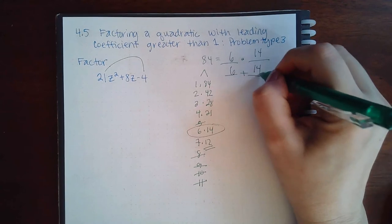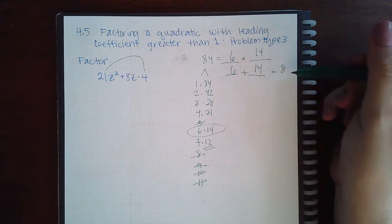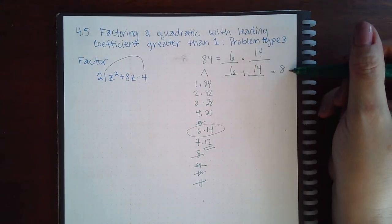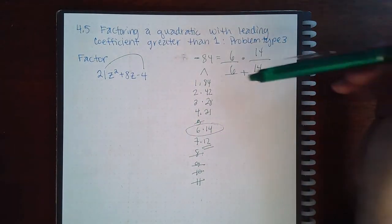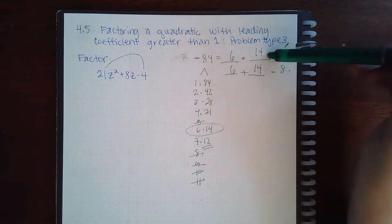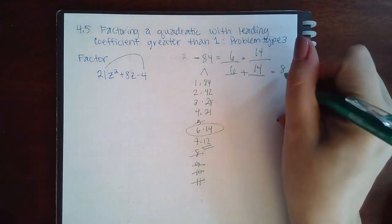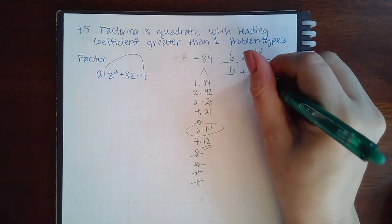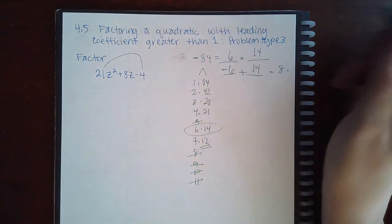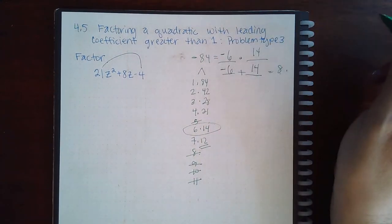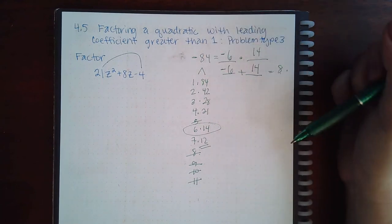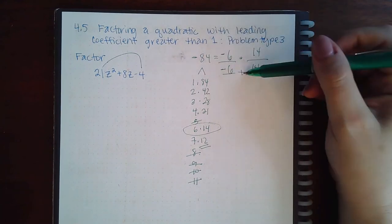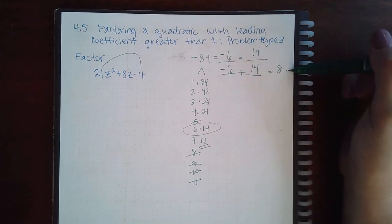6 and 14. It does need to be a positive 8, but it should actually multiply to give me a negative 84, which means one of these has to be negative. Since I need a positive 8 in the end, the big number should be positive, which means the little number is going to be negative. Let's verify: negative 6 times positive 14 is negative 84, negative 6 plus 14 is positive 8.